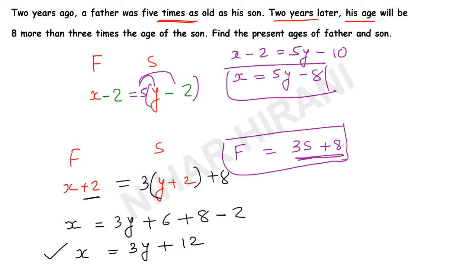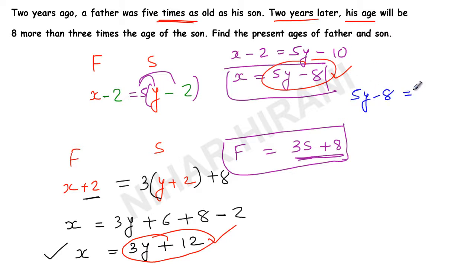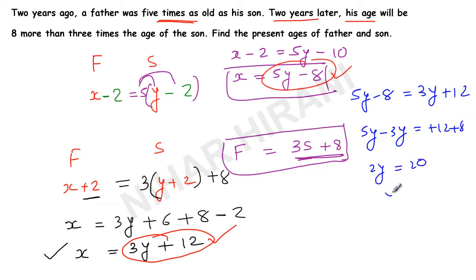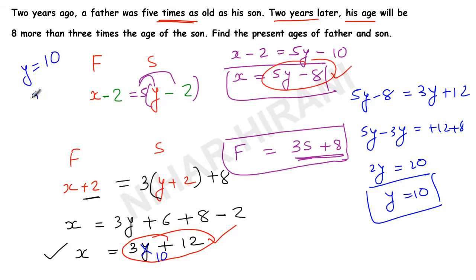Now let's get the final answer. The value of x from equation one is five y minus eight, and from equation two is three y plus 12. Since these two are equal, I write: five y minus eight equals three y plus 12. Simplifying: five y minus three y equals 12 plus eight, so two y equals 20, giving y equals 10. Son's age is 10 years. For father, substituting y equals 10: three times 10 is 30, plus 12 is 42. So son's age is 10 and father's age is 42.